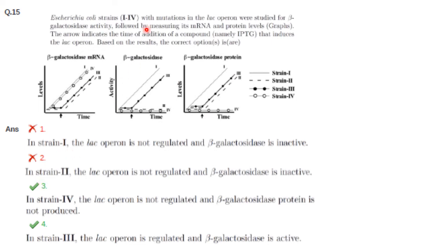Next question: E. coli strains 1 to 4 with mutations in the lac operon were studied for beta-galactosidase activity, mRNA and protein levels. The arrow indicates when IPTG is added to induce the lac operon. The graphs show the level of beta-galactosidase mRNA, the activity of beta-galactosidase enzyme, and the level of beta-galactosidase protein at different times for strains 1, 2, 3 and 4.